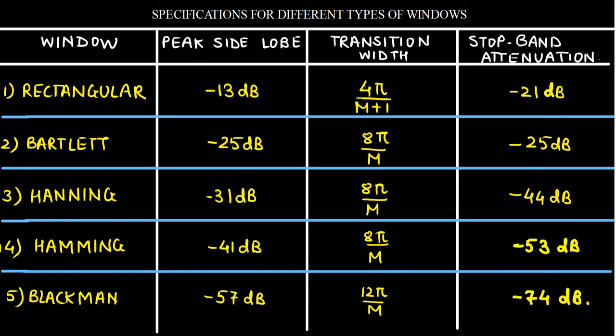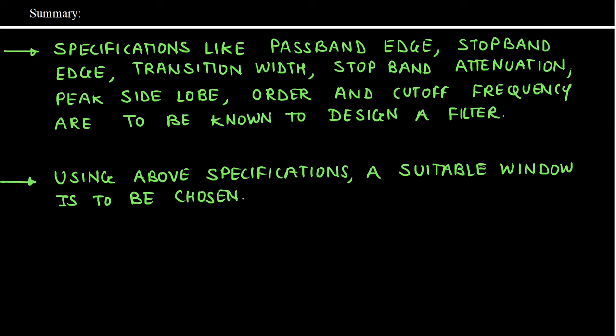So in this lecture, we have seen that we need specifications for designing a filter, including the pass band edge, stop band edge, transition width, stop band attenuation, peak side lobe, order, and cutoff frequency. These specifications can be used to design a suitable window. Thank you.